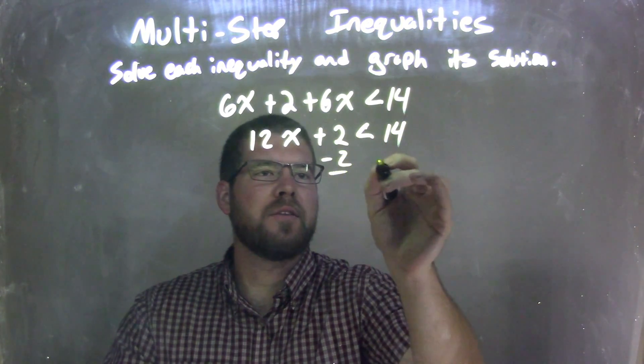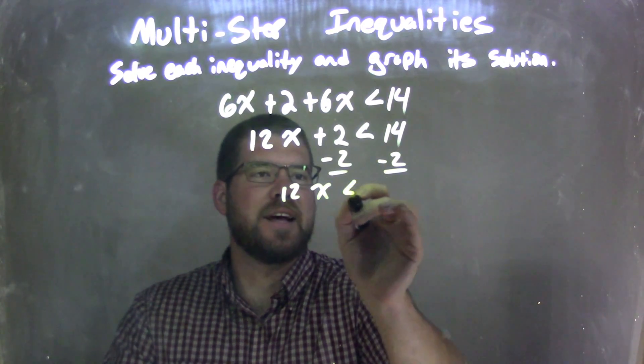Now I want to subtract the 2 from both sides, leaving me with 12x is less than 12.